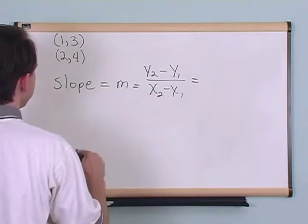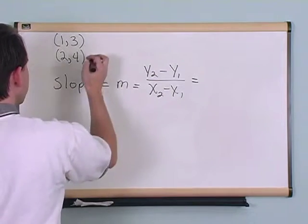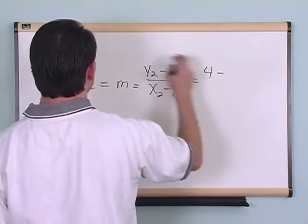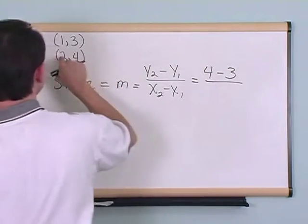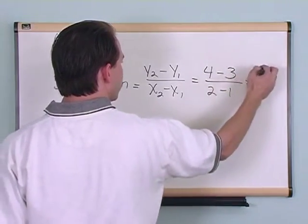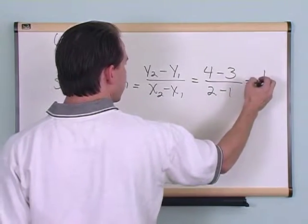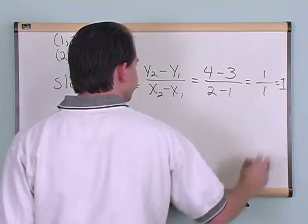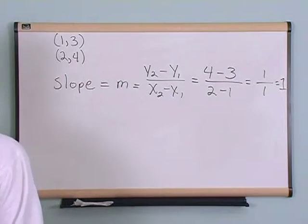So let's do that for a second. Okay, let's take y2, I'm over, 2 minus 1. 4 minus 3 is 1, 2 minus 1 is 1, so the slope of this thing is 1. Okay, the slope of that thing is 1.